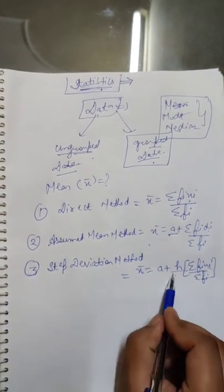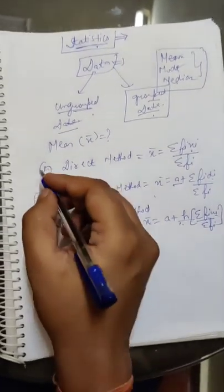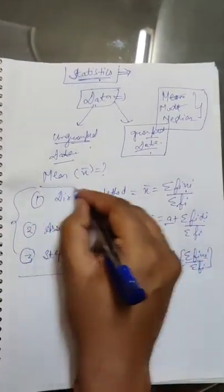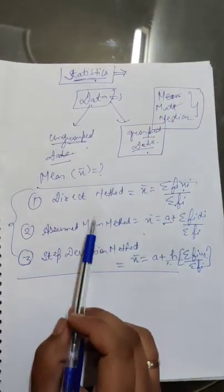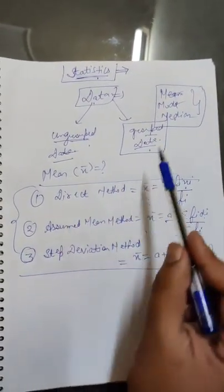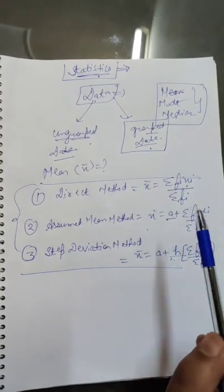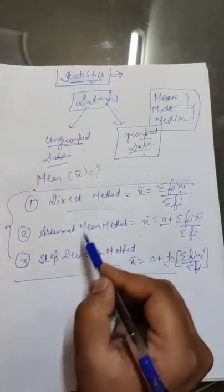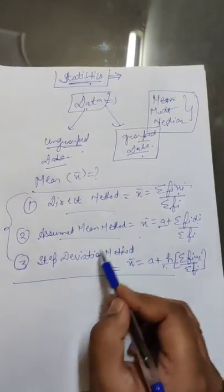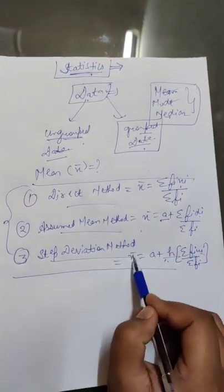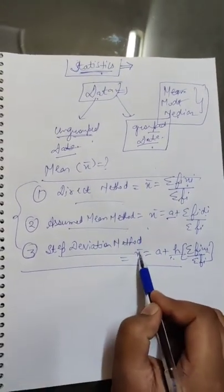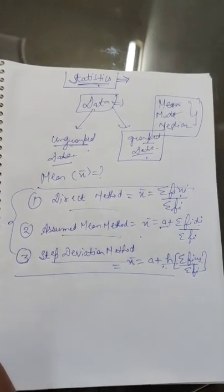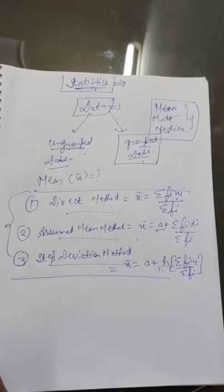These are the three methods to find the mean of grouped data: the direct method, the assumed mean method, and the step deviation method. We will now discuss questions regarding this.